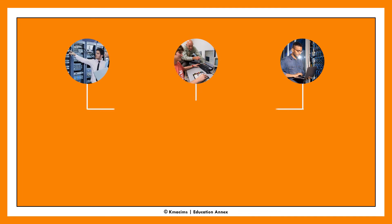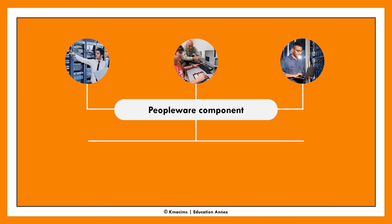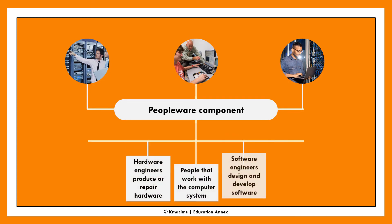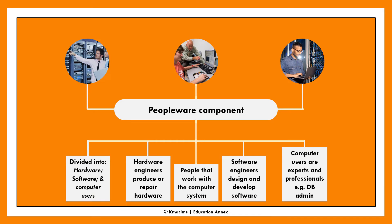The peopleware component refers to people that work with the computer system. It can be divided into three groups, though their functions may overlap: those that produce the hardware, called hardware engineers; those that produce the software, called software engineers; and those that use the computer system, called computer users. Computer users can further be divided into different professions based on expertise — for example, database administrators, network engineers, and desktop publishers.